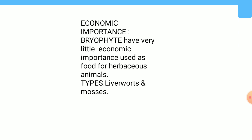Antheridia and archegonia are produced at the apex of the leafy shoot. After fertilization, the zygote develops into a sporophyte consisting of foot, seta, and capsule. The sporophyte in mosses is more elaborate than in liverworts. The capsule contains spores, which are formed after meiosis. Mosses have an elaborate mechanism of spore dispersal. Examples of mosses include Funaria, Polytrichum, and Sphagnum.